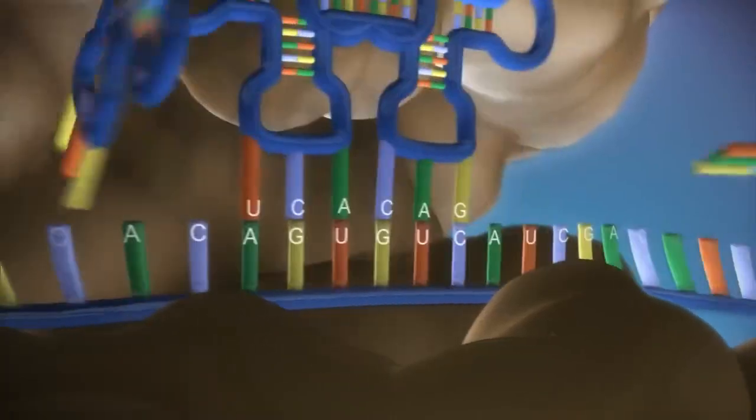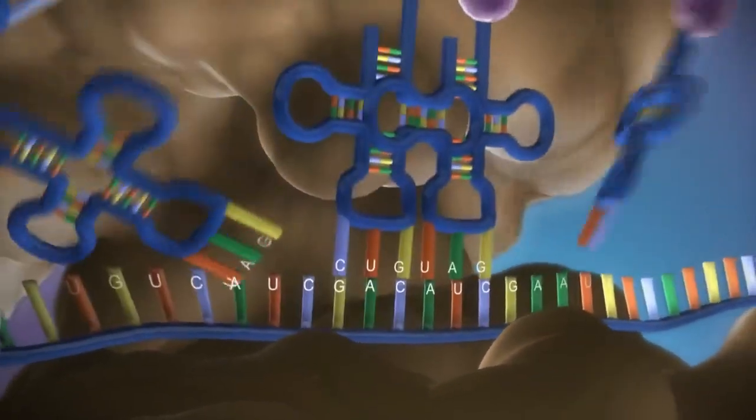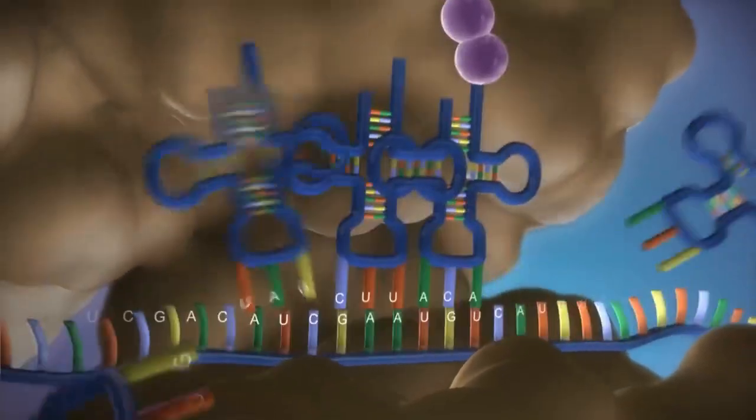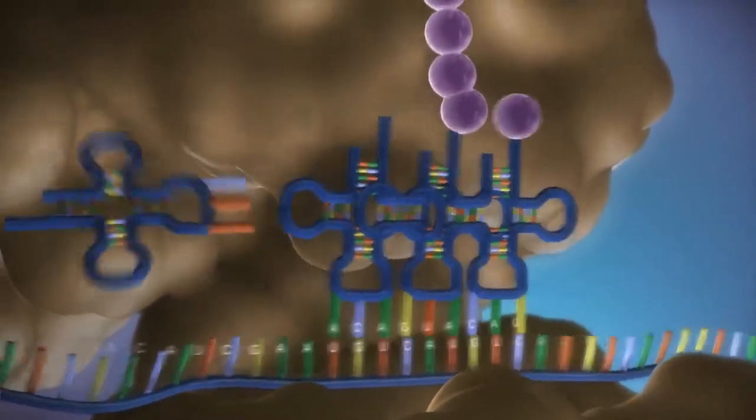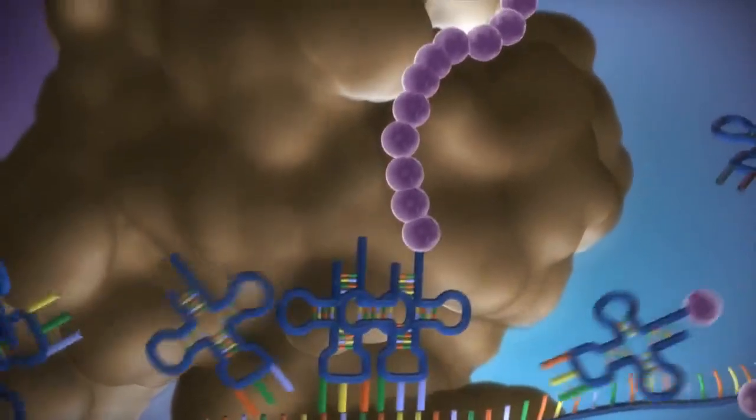The messenger RNA is read three bases at a time. As each triplet is read, a transfer RNA delivers the corresponding amino acid. This is added to a growing chain of amino acids.